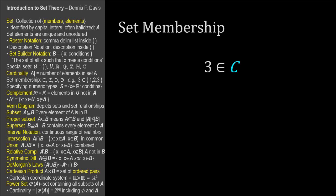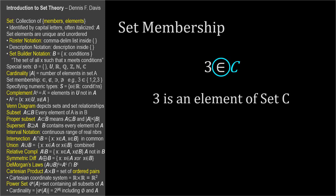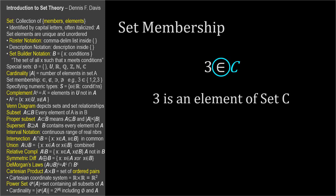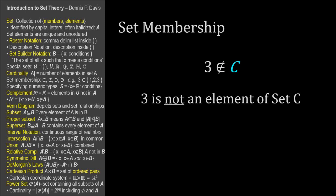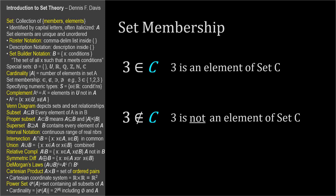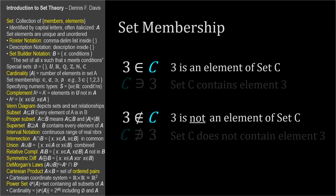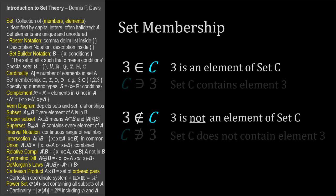We can say that a particular element is a member of a set like this: three is an element of set C. This symbol, denoting set membership, can also be read as 'is a member of' or 'is in.' I usually say 'is an element of' because the symbol resembles the letter E for element. To say that a particular element is not a member of a set, we use the element of symbol with a slash through it: three is not an element of set C. These statements can be turned around, so we can declare that a set contains an element. Set C contains element three, and set C does not contain element three. This is much less common.